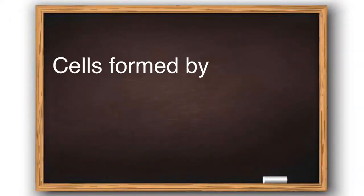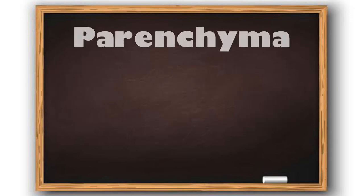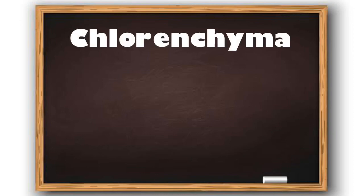Cells formed by meristematic tissue lose their ability to divide and form permanent tissue. The process of taking a permanent shape, size, and function is called differentiation. The first simple permanent tissue is parenchyma — it is a basic form of packing tissue. The cells are living and possess a nucleus. This tissue stores food, as in potato and beetroot.